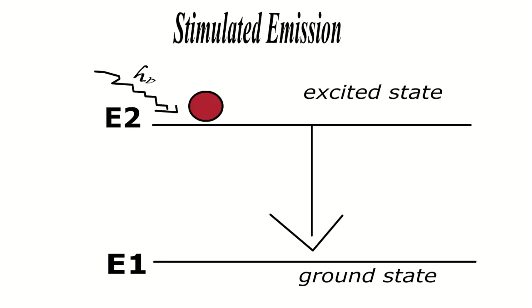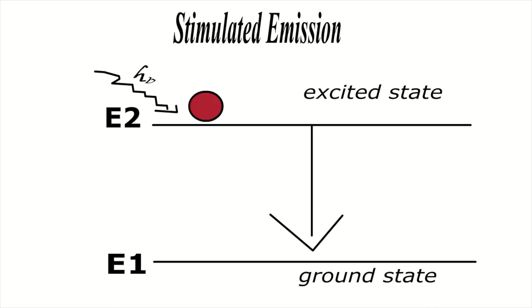The third process is stimulated emission. The word 'stimulated' stands for a forced reaction. In stimulated emission, electrons are initially in the excited energy level. There are certain excited states where the electron can stay for more than 10 to the power of minus three seconds. Electrons that stay in the excited energy level for 10⁻³ seconds are in what is known as a metastable state.